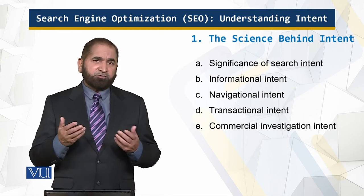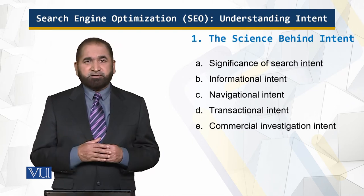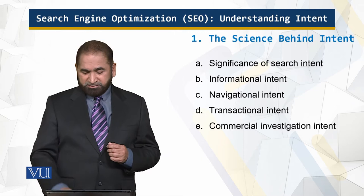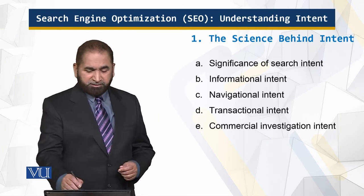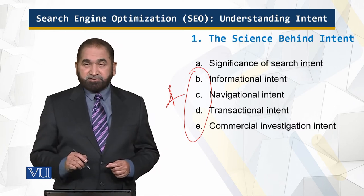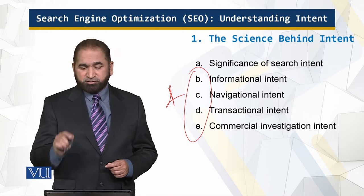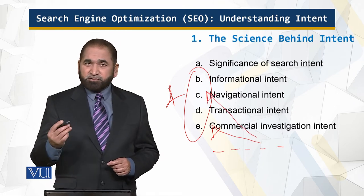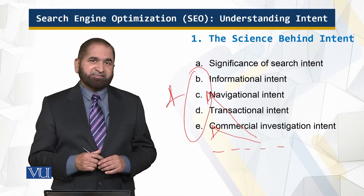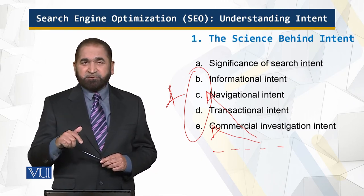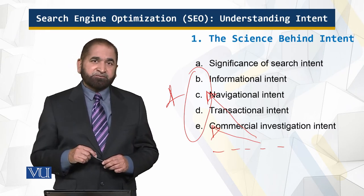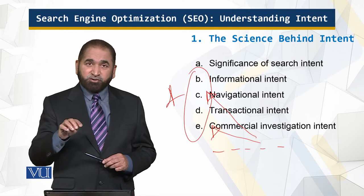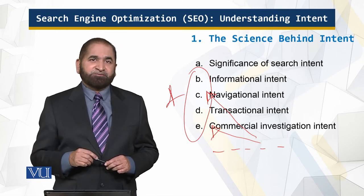Then there is the commercial investigation intent — I would like to know about a competitor, a company, or a business. So although you're typing keywords, these four categories of intent are different. Based upon the intent, the results are displayed by the search engine, and those results should address those intents. The search engine knows the intent not only from the keywords but from how you have optimized your website for search engine optimization.